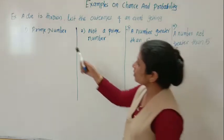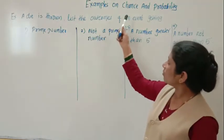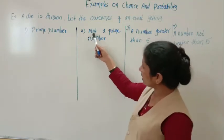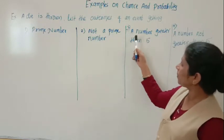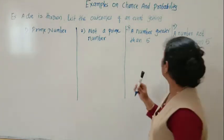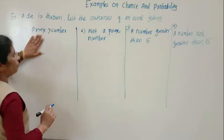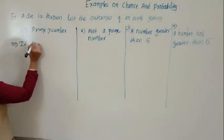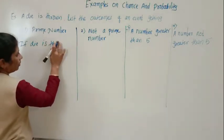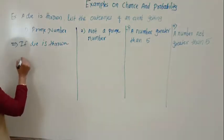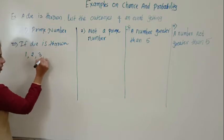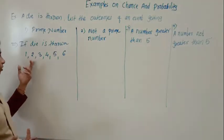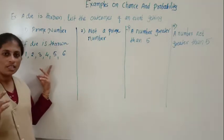Now we will see an example. A die is thrown. List the outcomes of the event of getting a prime number, not a prime number, a number greater than 5, and a number not greater than 5. First, if a die is thrown, which are the possible outcomes? You will get 1, 2, 3, 4, 5, and 6. These are the possible outcomes — a total of 6 outcomes.